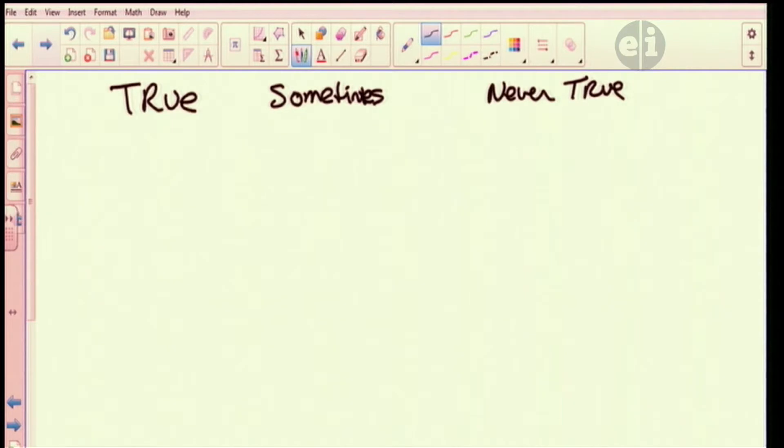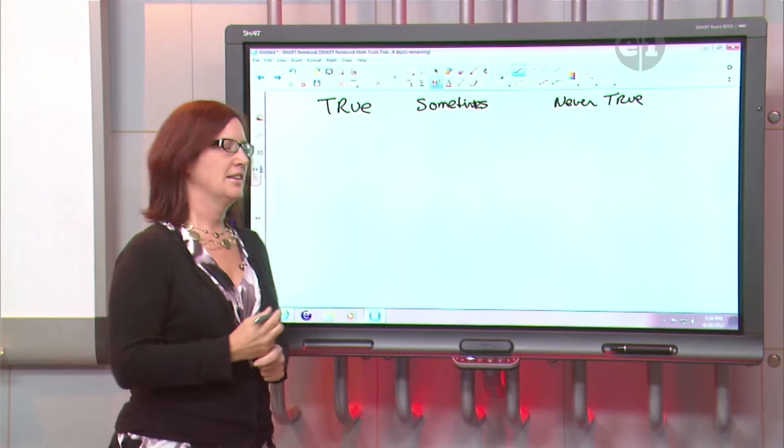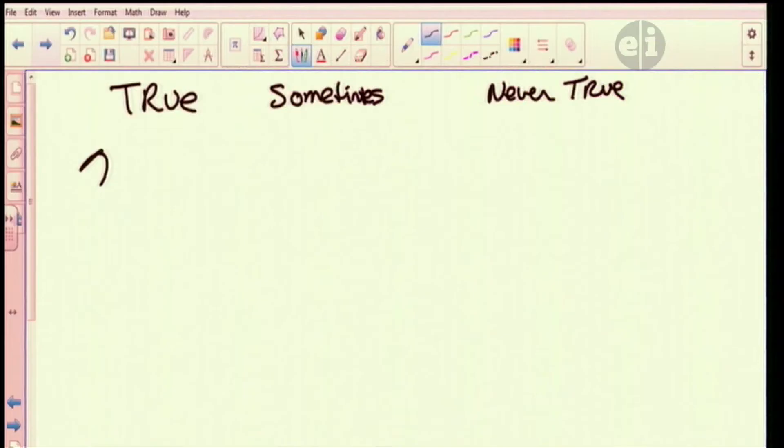Two angles in a triangle are supplementary. So we have two angles that are supplementary? No, two angles in a triangle. In a triangle, okay, are supplementary. Alright, a little messy, but it's okay. Alright, keep going.